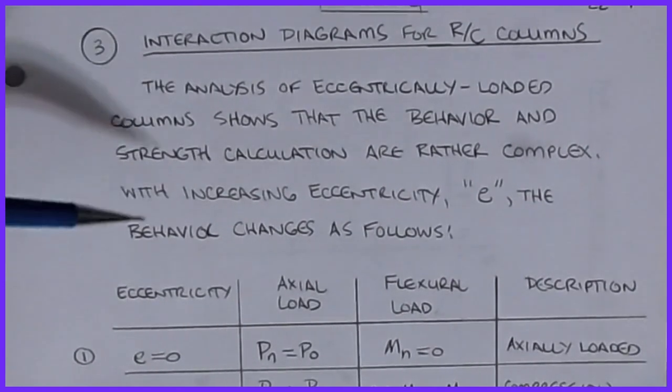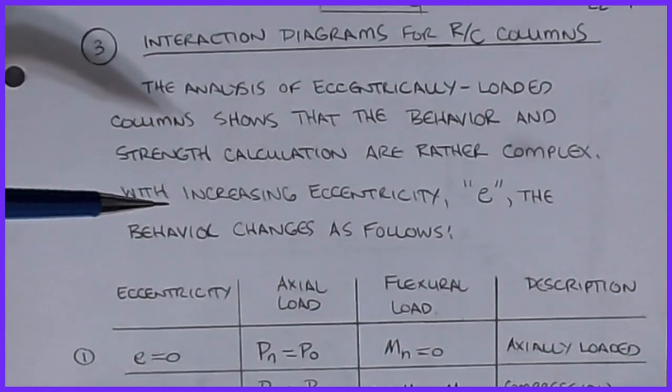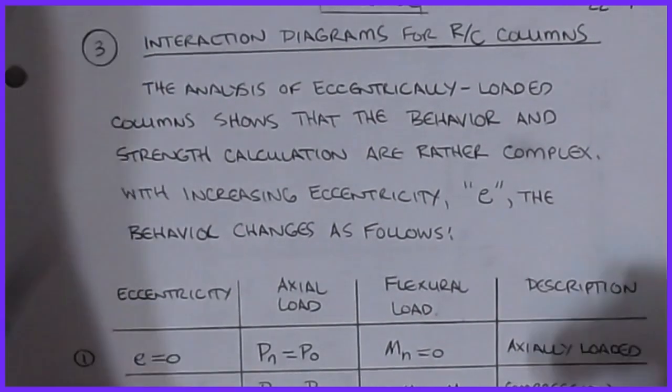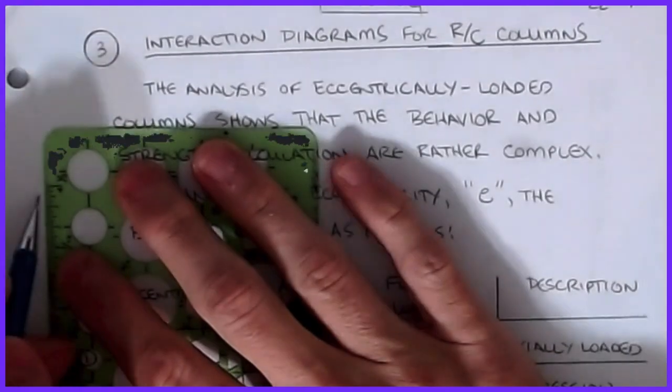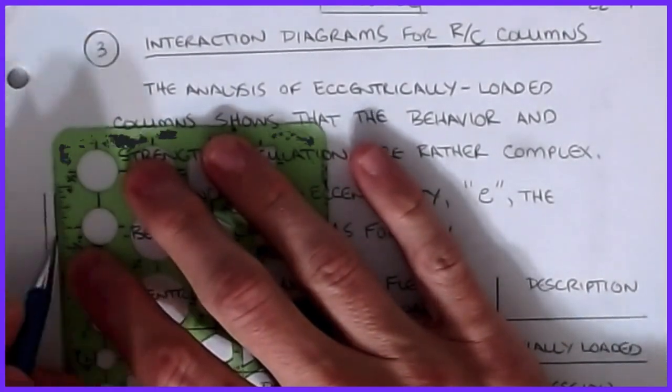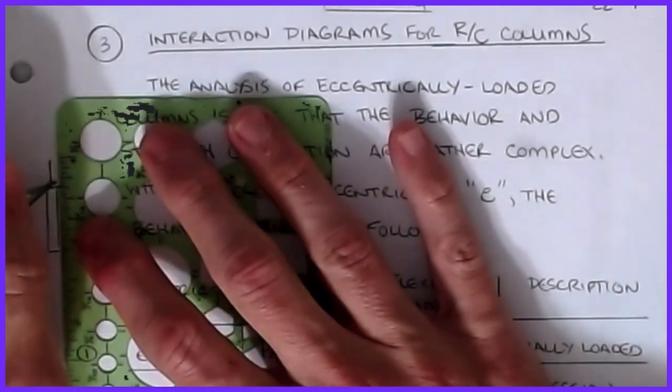With increasing eccentricity, we're going to use a variable e that represents our eccentricity. For a column, if I draw just a sketch of it, we know that if I have a point load acting at the center point, that would be concentric.